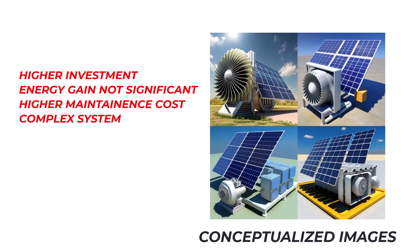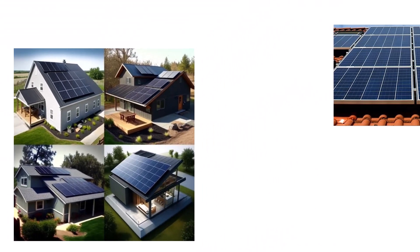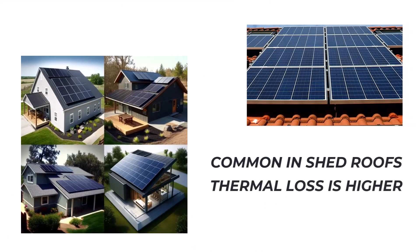The third option is integration with fully insulated back, where you install the modules at the mounting surface without leaving any significant gap between the two planes. This refers mostly to tilted rooftop installation, as shown in the pictures.